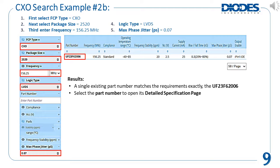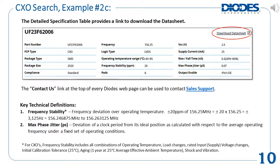Select the part number to open its detailed specifications page. A link to download the datasheet for this part is in the upper right. To request samples or additional information, a link to sales support is found at the top of every Diodes webpage under Contact Us. Key technical definitions are provided on this page for your reference.